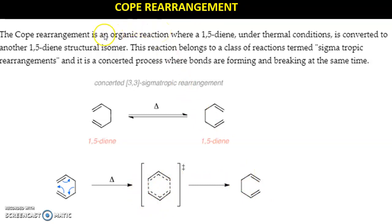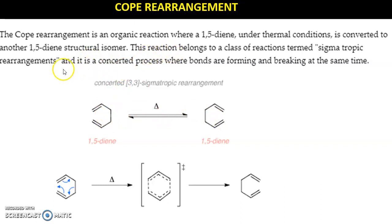So what is the Cope rearrangement? The Cope rearrangement is an organic reaction in which a 1,5-diene under thermal conditions is converted to another 1,5-diene. That product is a structural isomer of the starting material. This is called a sigmatropic rearrangement, and specifically it is called a 3,3 sigmatropic rearrangement.